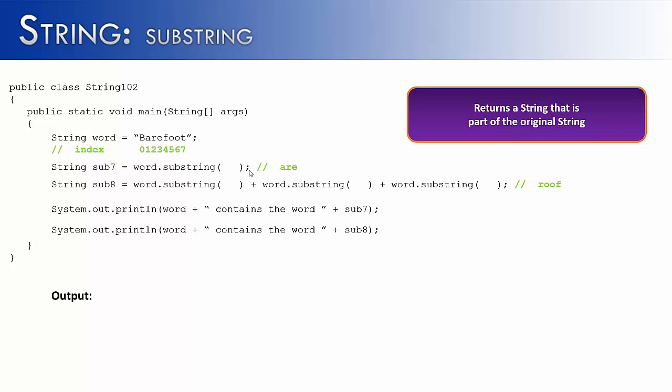Alright, let's look at ar. Hopefully, you realized it was starting at 1, where the a is, and ending at f. Remember, 4 is exclusive, so it would just read 1 to 3, which is the word ar. And so we would get barefoot contains the word ar.